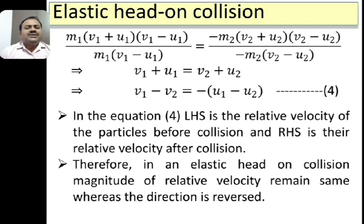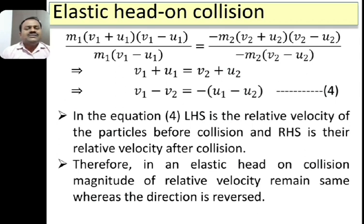We get V1 + U1 on the left hand side equal to V2 + U2 on the right hand side. Rearranging, taking V2 to the left and U1 to the right, we get V1 − V2 = −(U1 − U2). Let this be equation 4. Here V1 − V2 represents the relative velocity after collision and U1 − U2 represents the relative velocity before collision. Therefore, in an elastic head-on collision the magnitude of relative velocity remains the same but its direction is reversed.